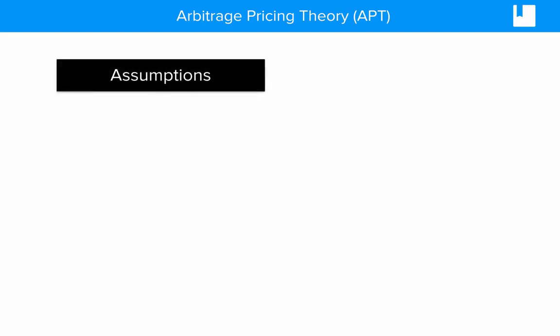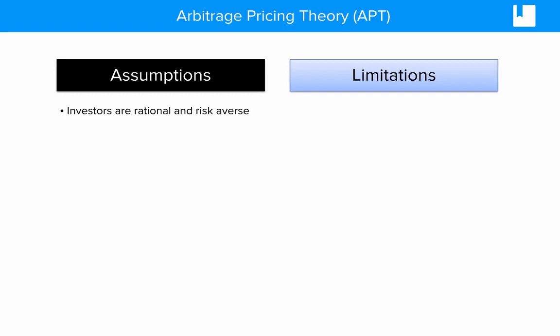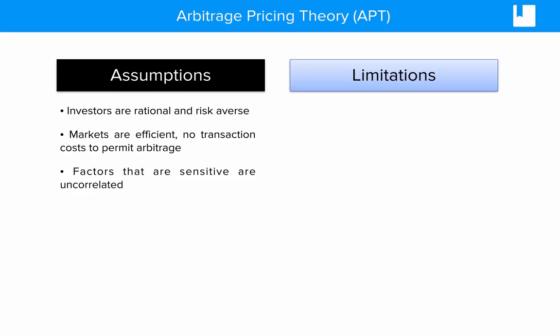Just like with the CAPM model, the Arbitrage Pricing Theory has assumptions and limitations as well. In assumptions for the APT, we again assume that investors are rational and risk-averse. We assume that markets are efficient, incorporating information perfectly. There are no transaction costs to permit arbitrage, which means we can't earn profits from mispriced securities. The factors identified in the APT model are uncorrelated to each other; otherwise, this will yield erroneous results in the model.